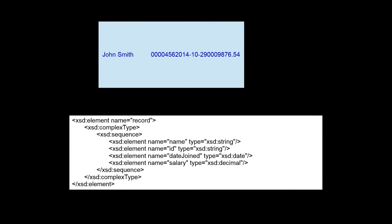A DFDL schema is actually an XML schema with additional information that describes the physical format of the data. Here we can see the XML schema entries that describe the logical data, but this is not enough information for a parser to translate our fixed length data into a logical structure. We need to add information that describes the physical format of the data.